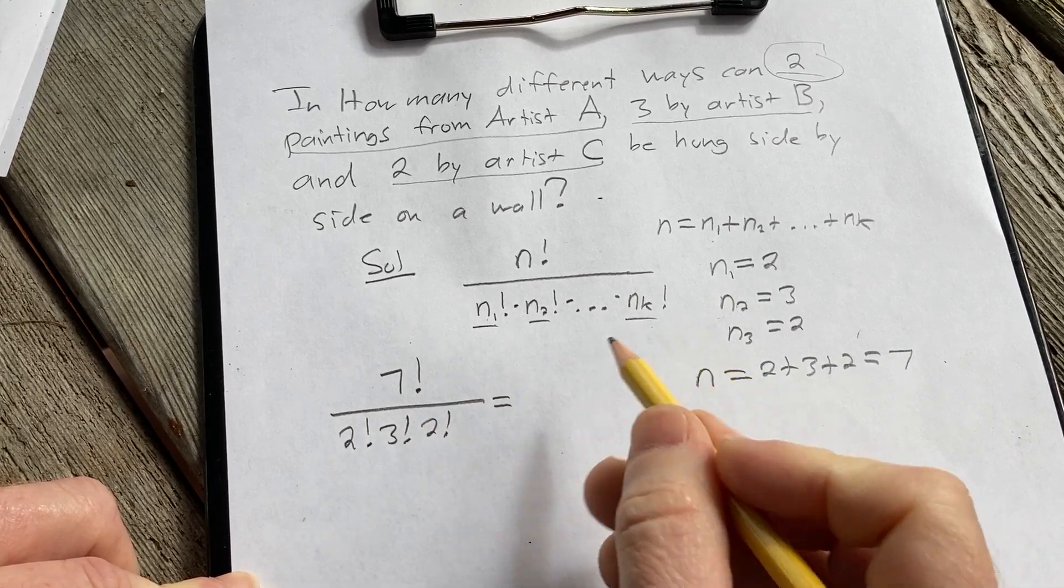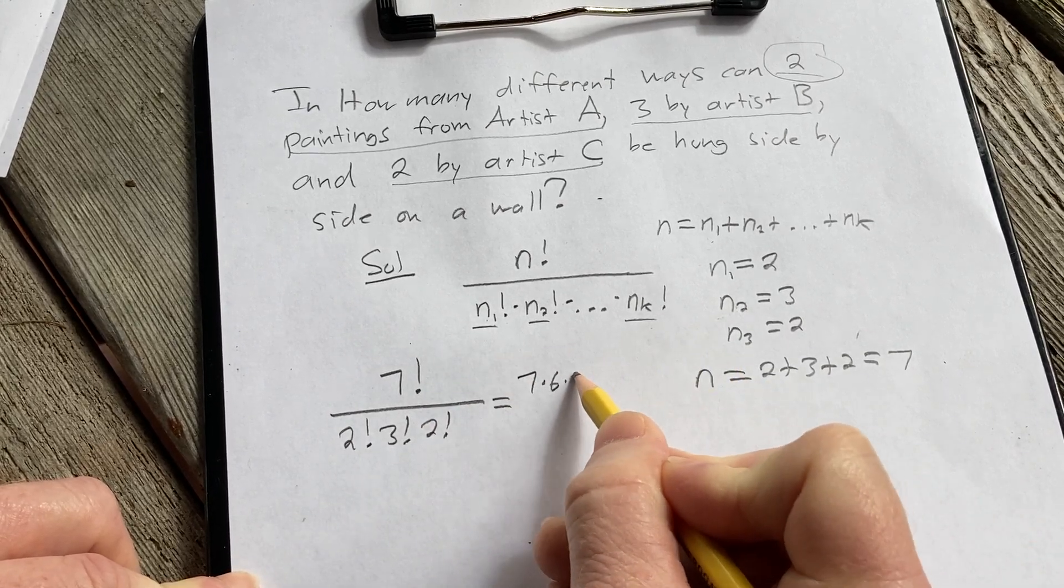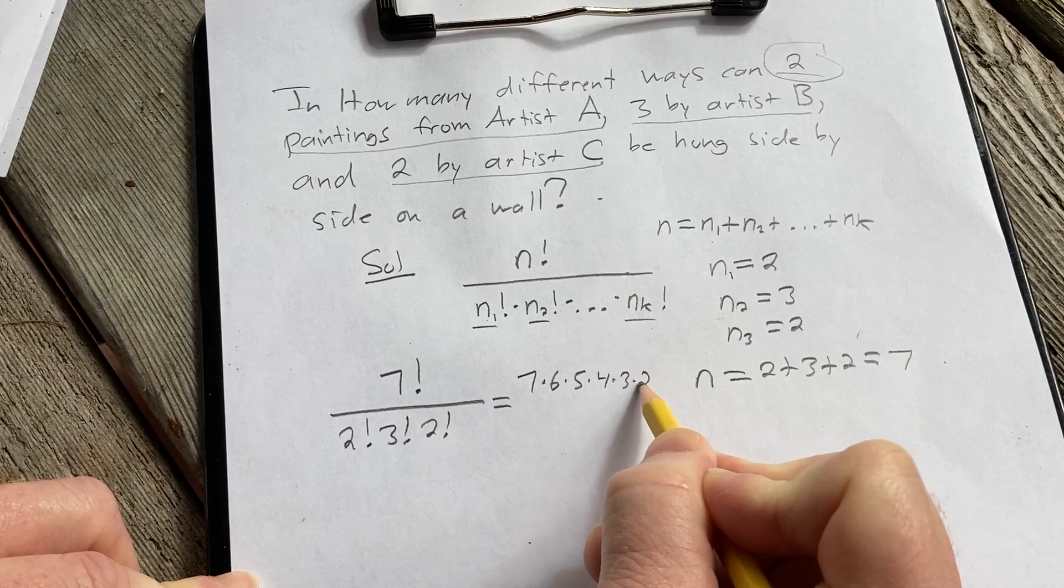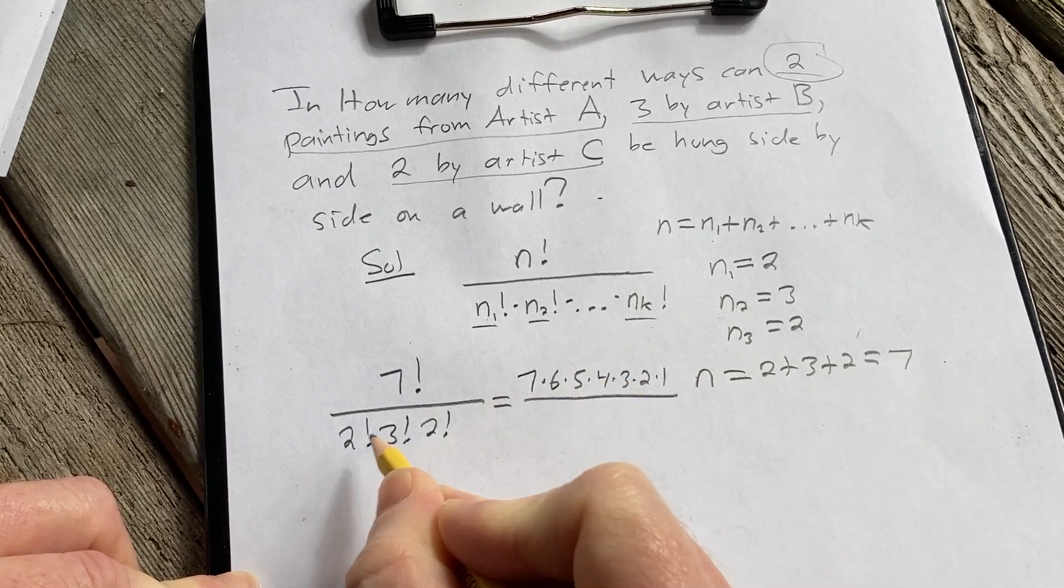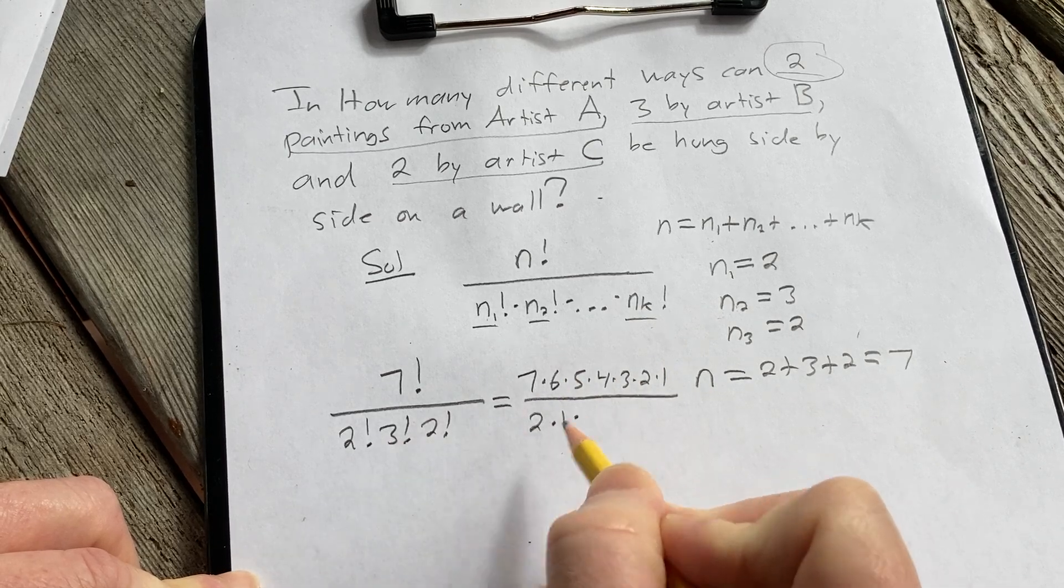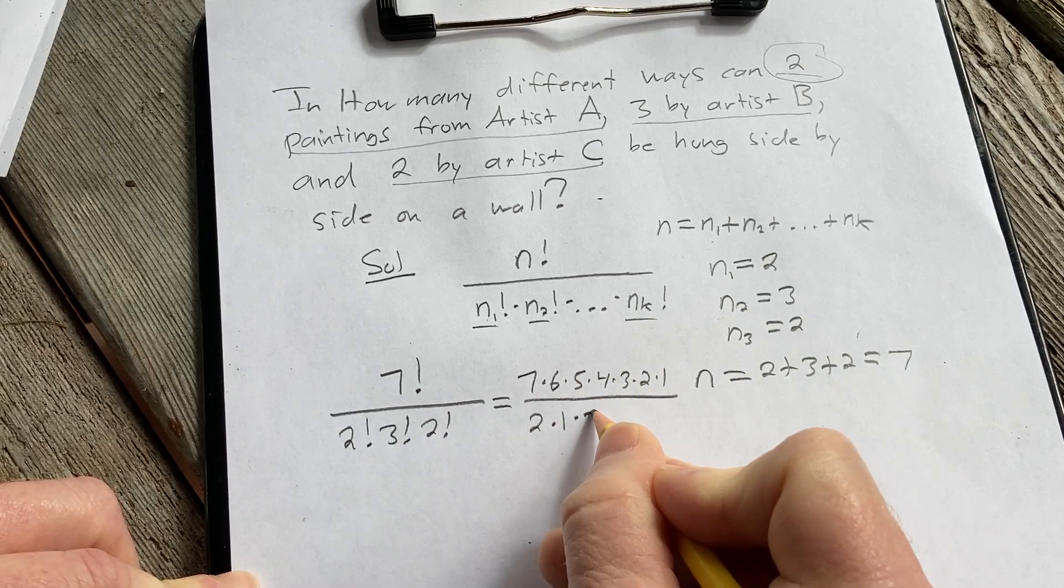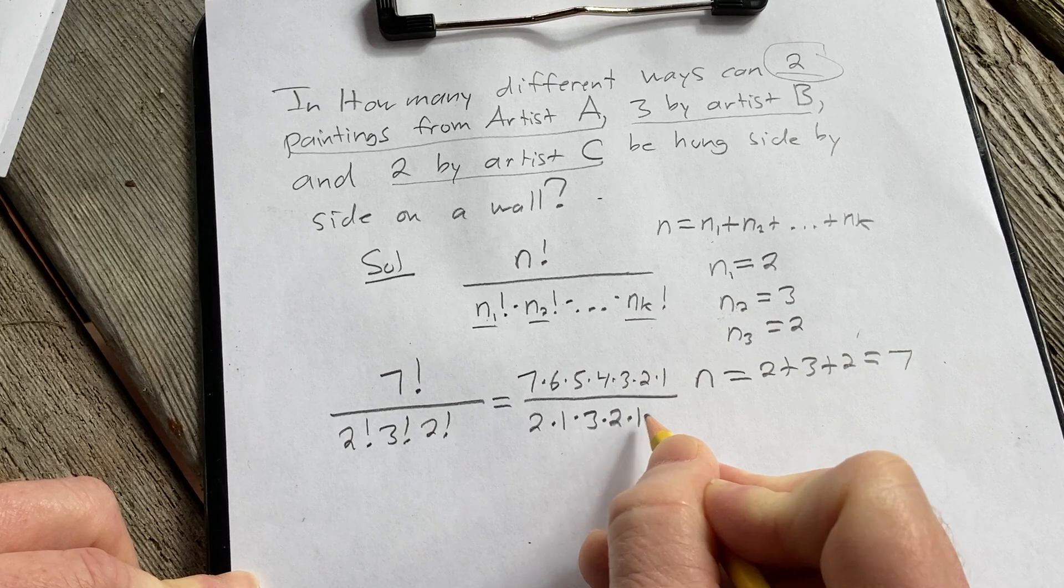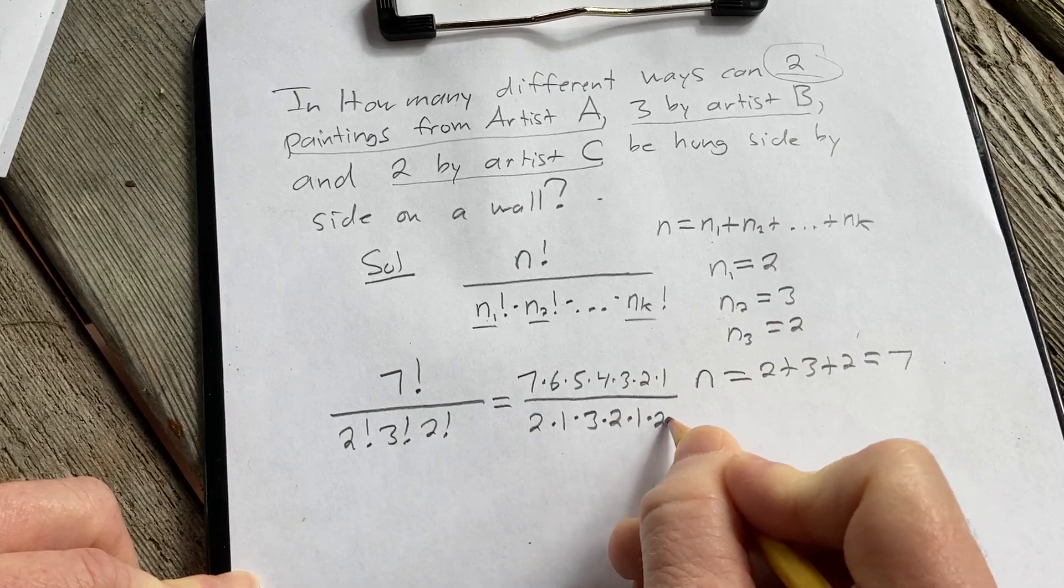7 factorial, we can work it out. 7 times 6 times 5 times 4 times 3 times 2 times 1. And let's just write it all out. 2 factorial is 2 times 1 times 3 factorial which is 3 times 2 times 1. And 2 factorial is 2 times 1.